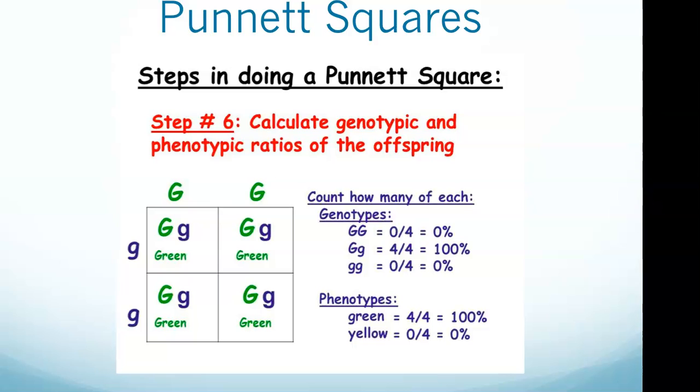After that, label each square starting with the letter to the left of the square, followed by the letter above the square. And so you can see what we've done there. In this case, we have, when we see those two capital G's, those are both dominant. You see those two lowercase g's, those are both recessive. And then so we have one dominant and one recessive within each square in the Punnett square.